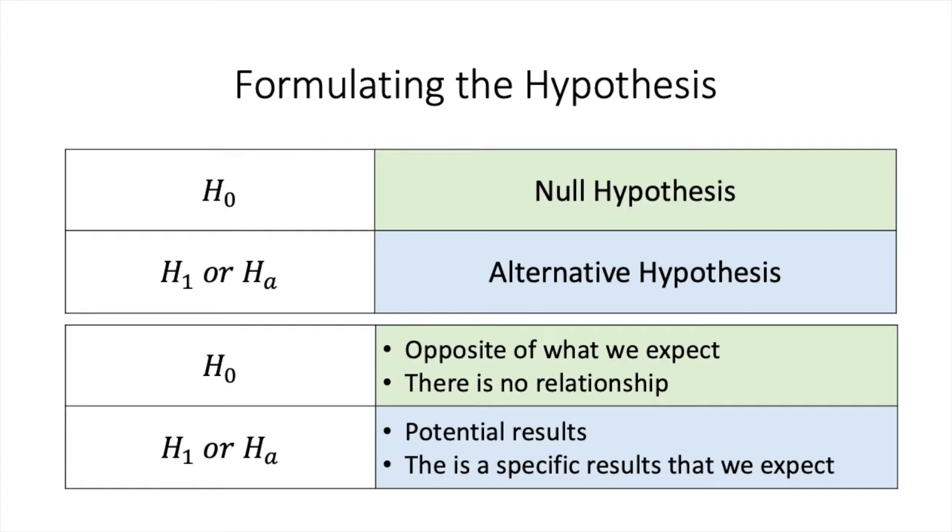So in formulating the hypothesis, you need to be aware of two things. You need to know the null hypothesis and you need to know the alternative hypothesis. The null hypothesis is denoted as H0 and the alternative hypothesis is denoted as H1 or sometimes HA.